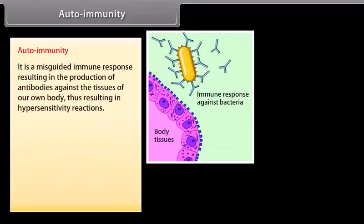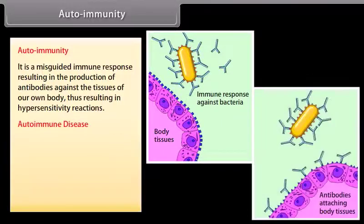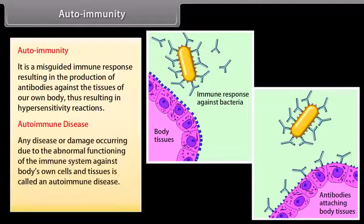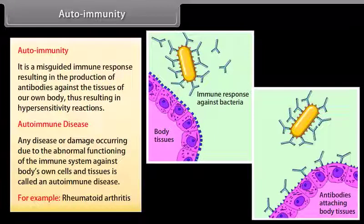Autoimmunity is a misguided immune response resulting in the production of antibodies against the tissues of our own body, thus resulting in hypersensitivity reactions. Any disease or damage occurring due to the abnormal functioning of the immune system against the body's own cells and tissues is called an autoimmune disease — for example, rheumatoid arthritis.